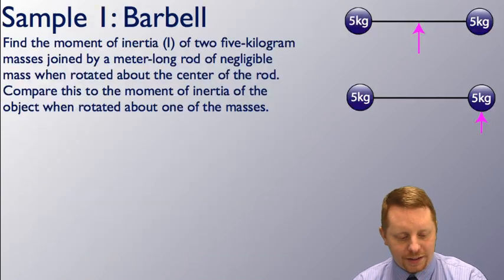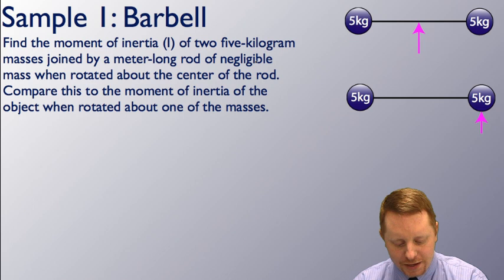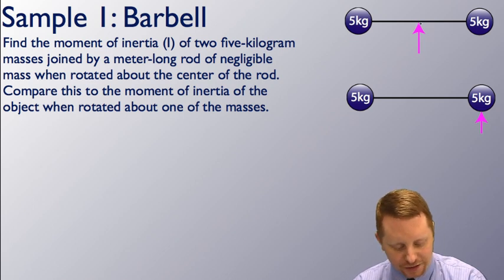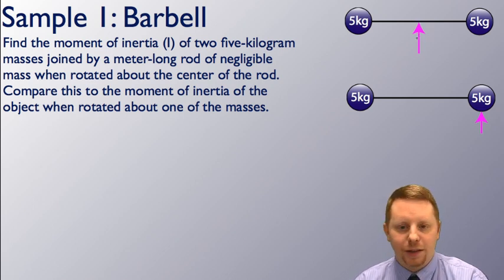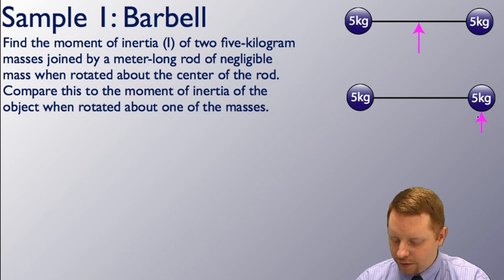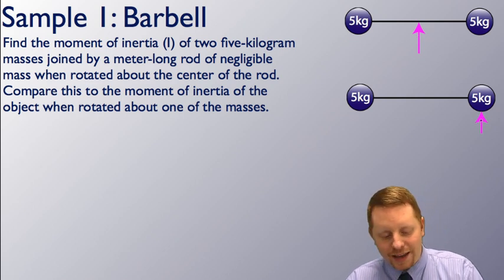Sample problem: find the moment of inertia of two five-kilogram masses joined by a meter-long rod of negligible mass when rotated about the center of the rod, and then find the moment of inertia when we rotate it about one of the masses.